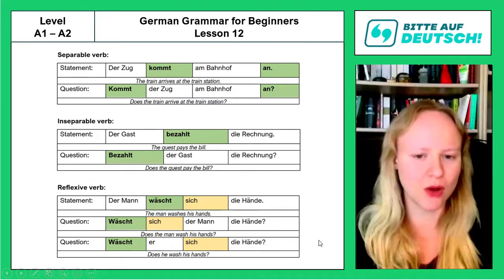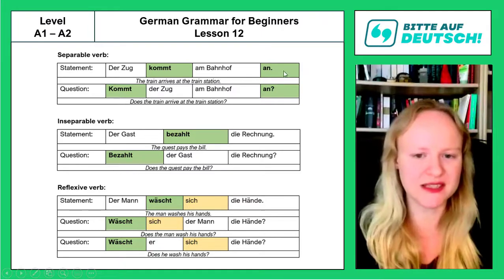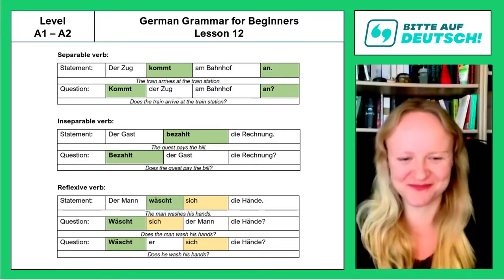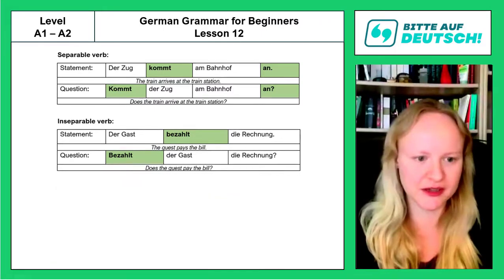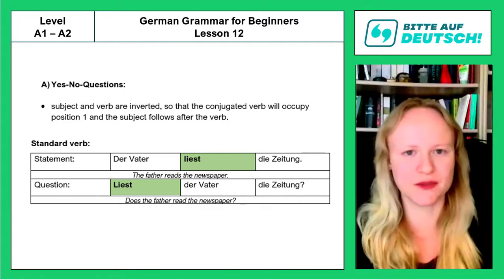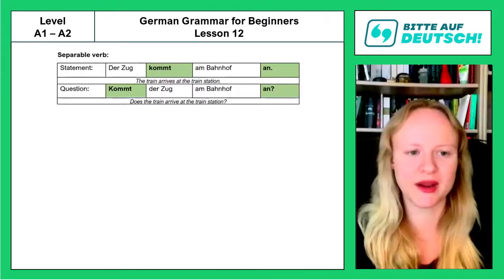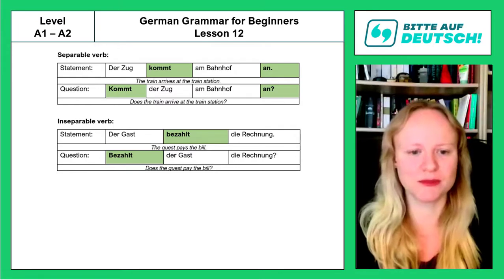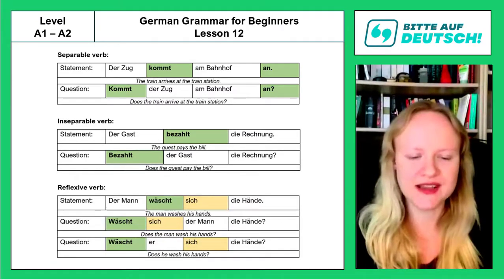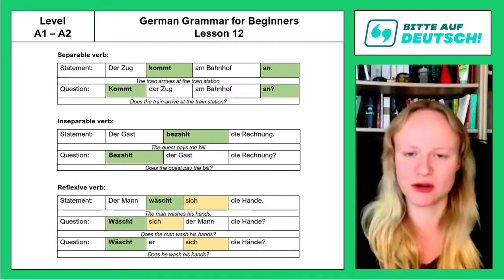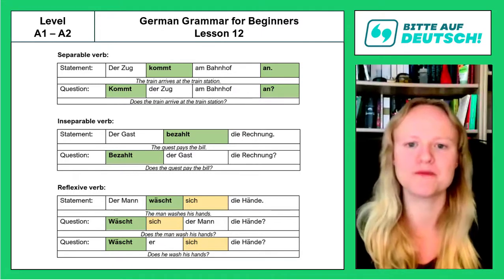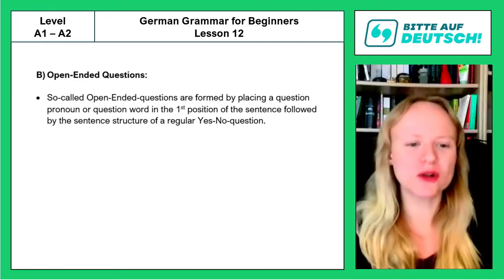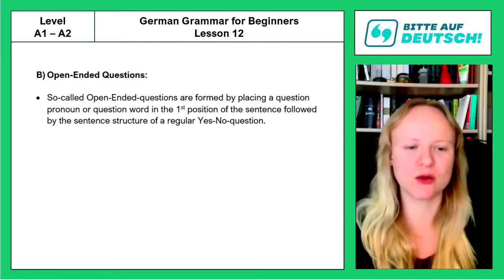The presence of reflexive pronouns or separable prefixes makes things more complex — but German is complex, not complicated. To summarize: standard verbs use simple inversion; separable verbs keep the prefix at the end; inseparable verbs behave like standard verbs; and reflexive verbs require attention to the reflexive pronoun position depending on whether the subject is a noun or a personal pronoun.